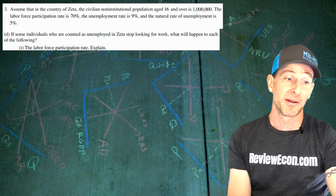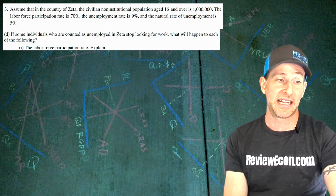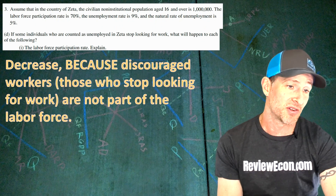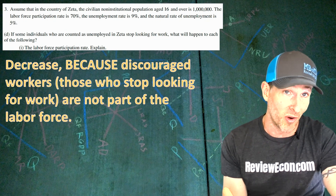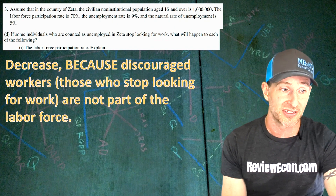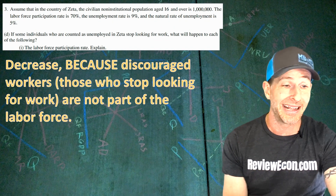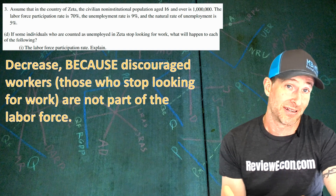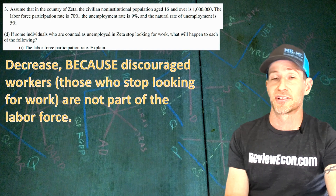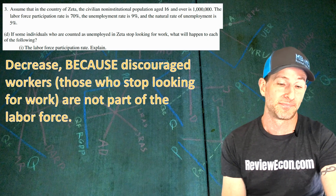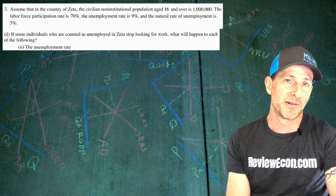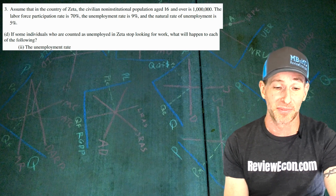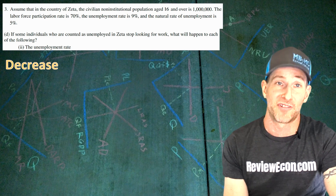Part D: if some individuals counted as unemployed stop looking for work, what happens to the labor force participation rate? We'll see a decrease, because discouraged workers — those no longer looking for work — are not part of the labor force. We see a decrease in both unemployed people and the number in the labor force, while the population hasn't changed, so the labor force participation rate decreases. What about the unemployment rate? Those unemployed workers who stopped looking for work are now discouraged workers, no longer considered unemployed, and as a result the unemployment rate falls.